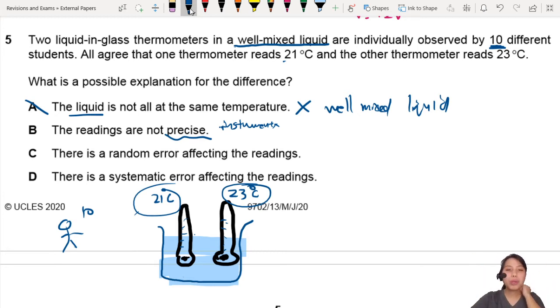C: There's a random error affecting the readings. Now this one doesn't seem random because you have 10 different people reading the same thing. That's not random - they all agree that it's 21 degrees. So that's not a random error anymore. 10 people get the same reading, so it's not C.